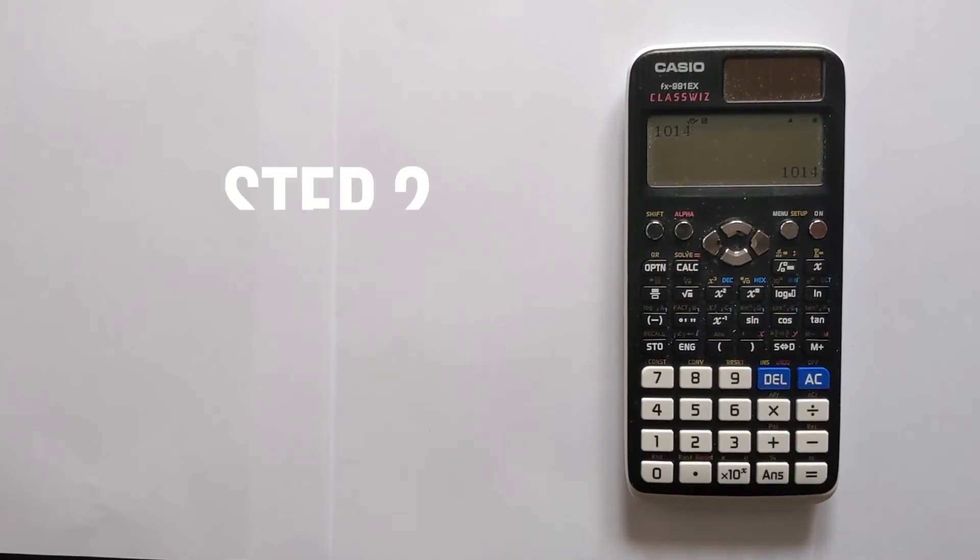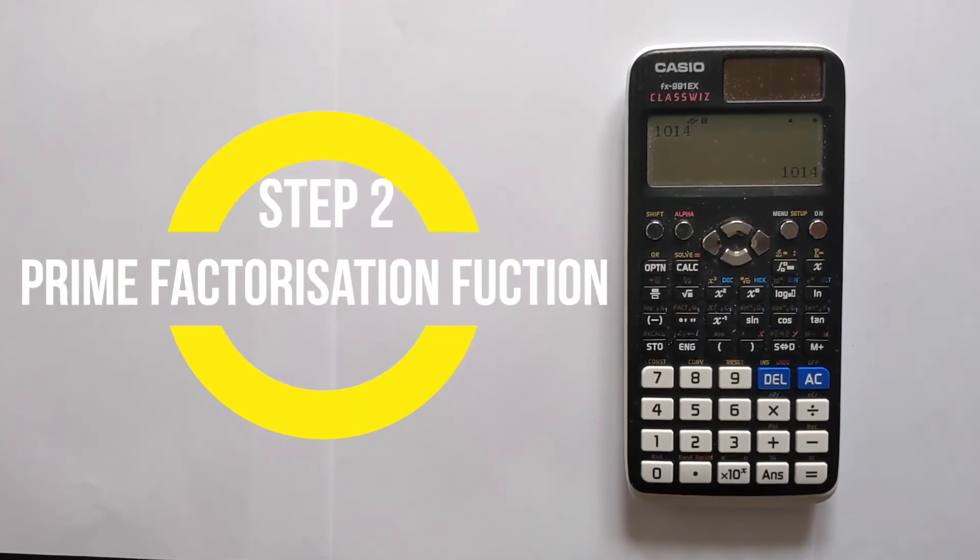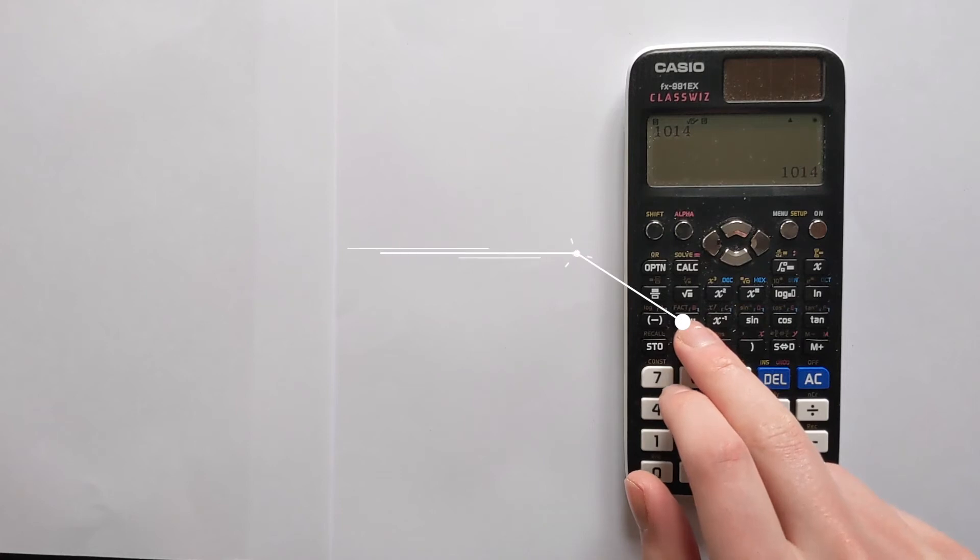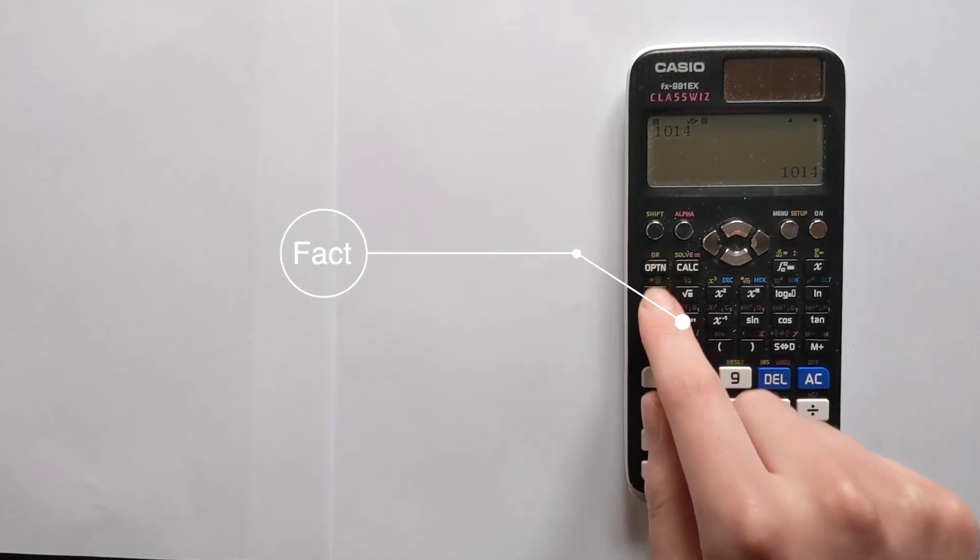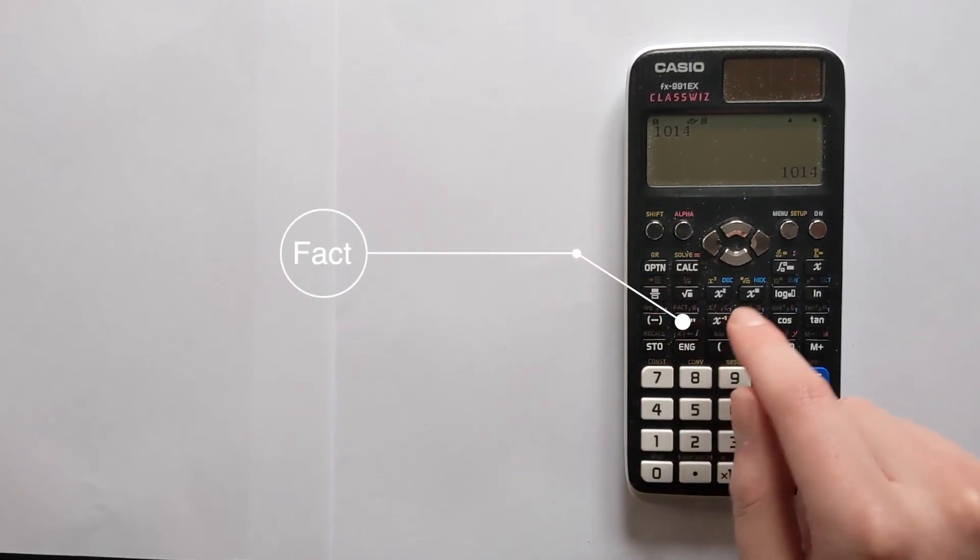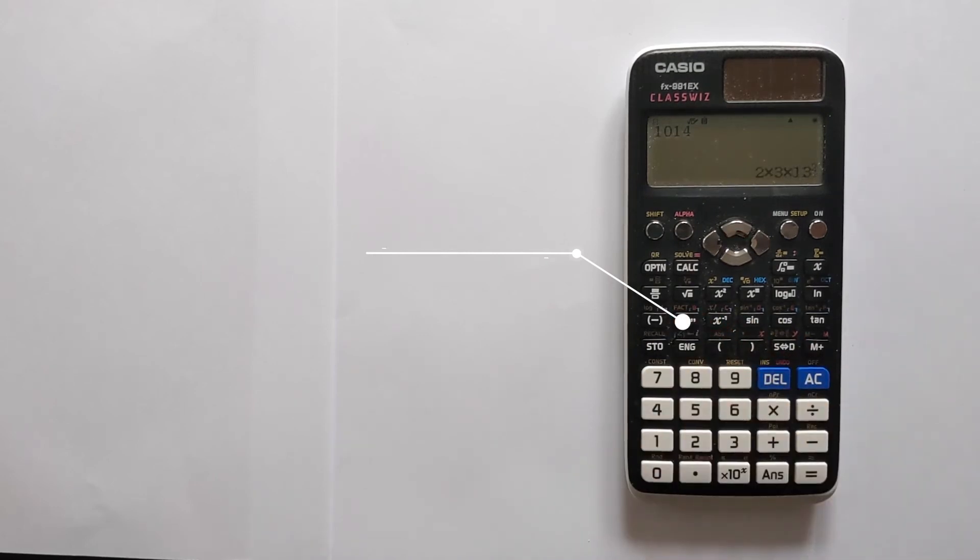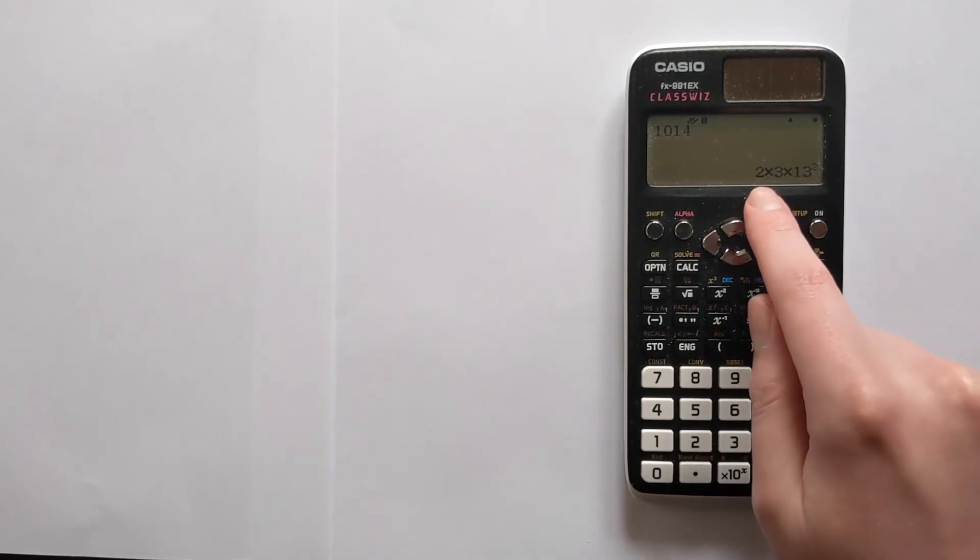That's now in the calculator's memory. The next step is I need to use the prime factorization function. To do that, I press shift, which lets me access all of these yellow functions. Then I want to find fact here, which is one, two, three rows down. It's got fact written above it with the letter B. You press that and you've now got your prime factorization.